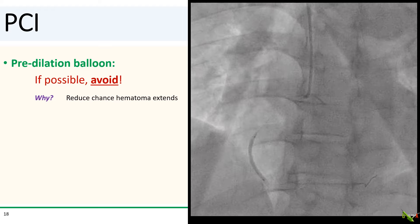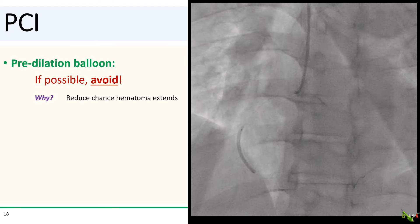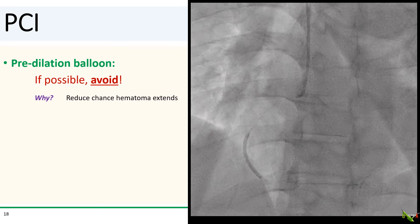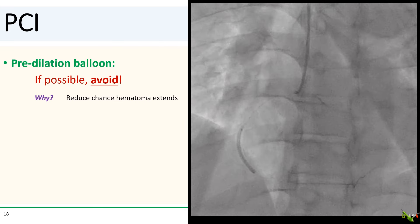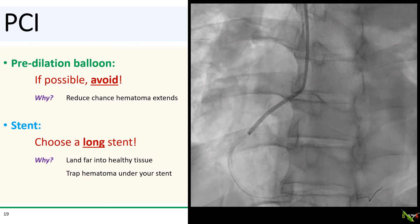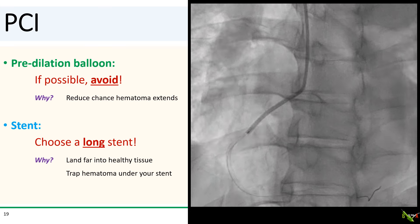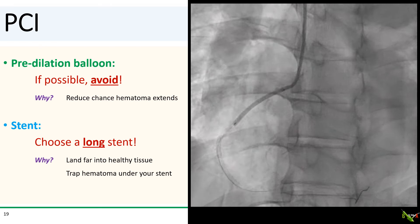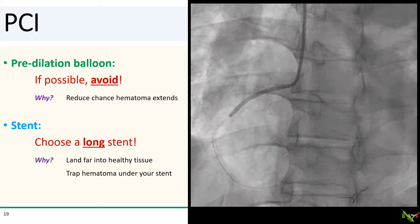Should we pre-dilate? Normally I always try to prep the lesion before stenting, but for SCAD and dissections in general, I do the opposite. Pre-dilating can cause the intramural hematoma to extend and propagate the dissection. In SCAD, if I can get my stent to the right place without pre-dilating, I don't pre-dilate. As for the stent, I choose very long stents — far longer than normal — landed far down into healthy tissue. The idea is that the stented segment in healthy tissue will pin the dissection down and help prevent the intramural hematoma from propagating further as the stent expands more upstream.